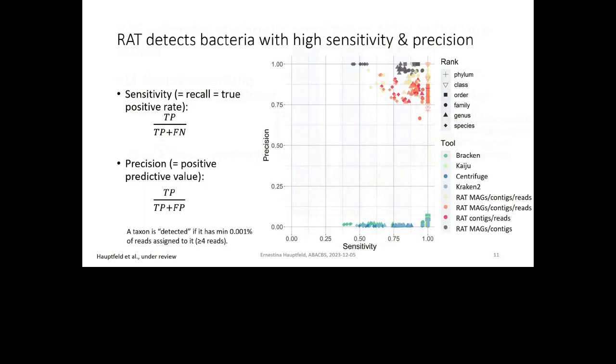And then when we look at what taxa are we supposed to find, then we get this. So precision in this case means all of the taxa that are found by each tool, are they also supposed to be there? So what fraction of the taxa that the tool has identified is actually supposed to be in the profile. And then sensitivity is what fraction of the taxa that we're supposed to be in the sample have been found by the tool. And there you can see that RAT does really well. So usually we have a trade-off where if your tool is really, really sensitive, then it will also find a lot of taxa that are not supposed to be there. We see that with Kaiju here, however, RAT actually does really well on both.